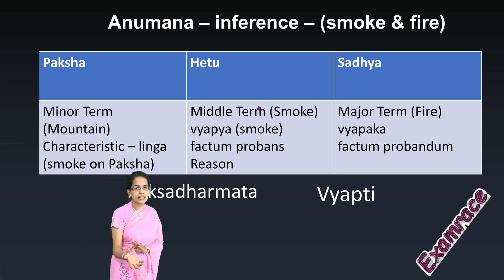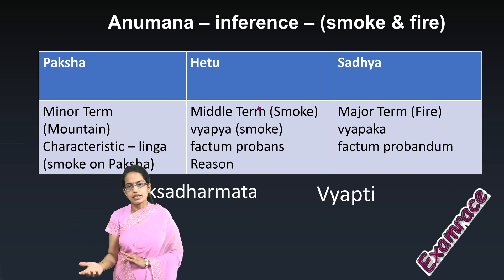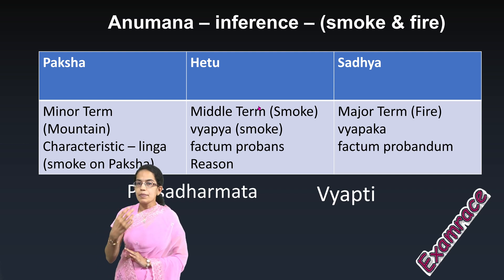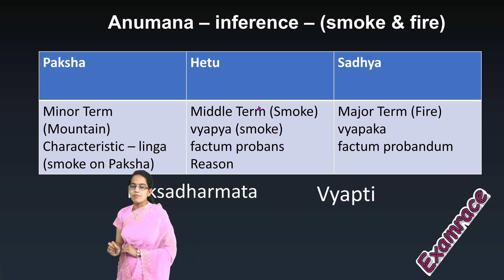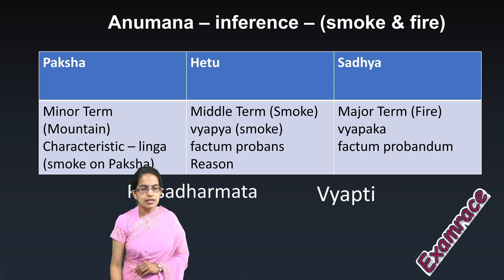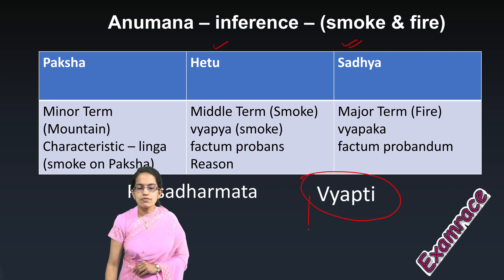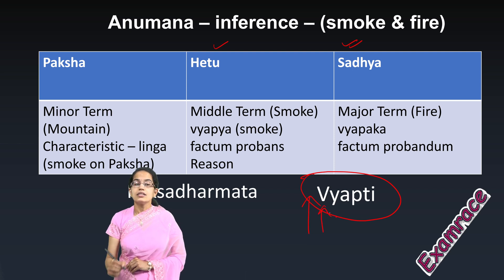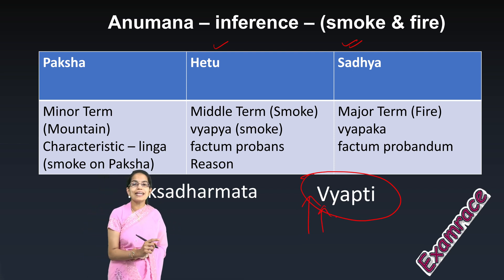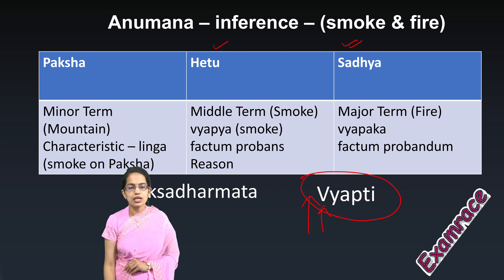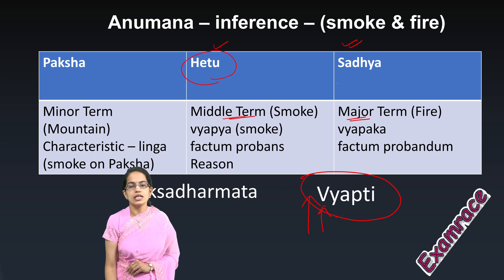In this example, the mountain where the event was is the minor term. Smoke is the middle term and fire is the major term. The relation established between the middle term and the major term is what is known as Vyapti. Today we would understand the types of relations based on application that can exist between the middle term (the Hetu) and the major term (the Sadhya).